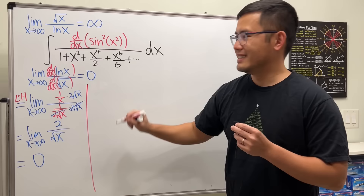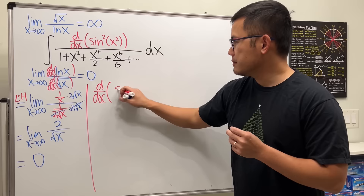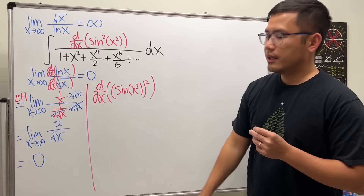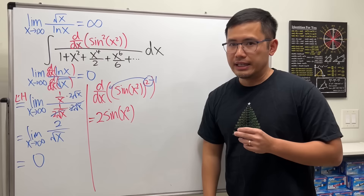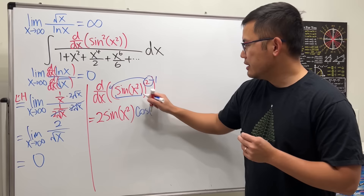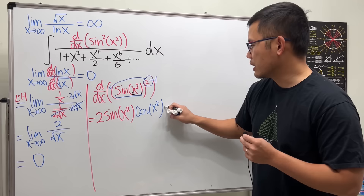Now moving to the next part — the derivative. This is the same as taking the derivative of sin(x²) squared. From the outside, we bring the power to the front and subtract one by the power rule, giving us 2·sin(x²). Then by the chain rule, multiply by the derivative of sine which is cosine — keeping the same input — and finally multiply by the derivative of the inside, which gives 2x.